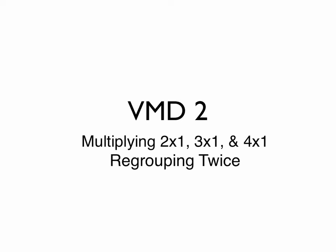Welcome to Vertical Multiplication Division Booklet 2, covering multiplying 2 by 1, 3 by 1, and 4 by 1, with up to regrouping 2 times.